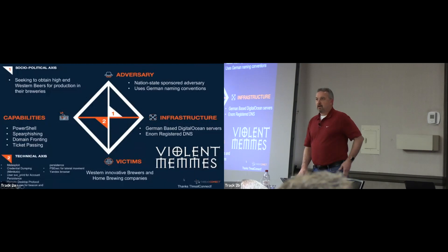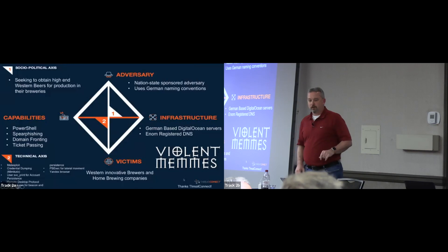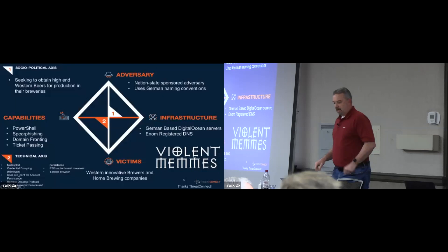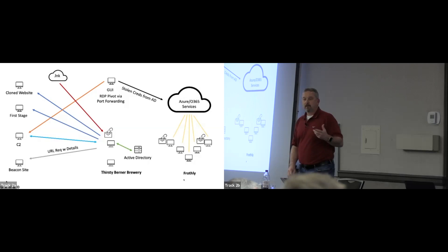As we came up with the goals and started forming this out, we built that diamond model to say, this is what we're looking like. The capabilities were my goals. We used a German-based DigitalOcean server and ENOM for DNS to emulate that adversary. And before we went further, let's draw a picture to help visualize this — which is also where that Thirsty Burner Brewery came in, because we were doing an ICS scenario as well.